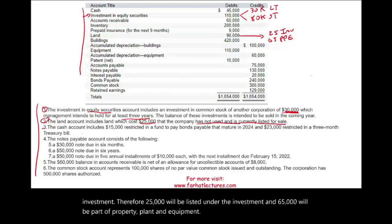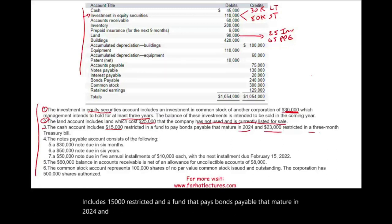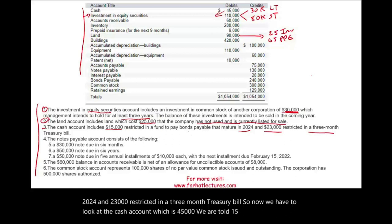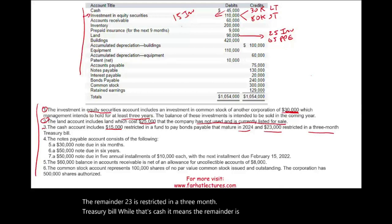Number three, the cash account includes $15,000 restricted in a fund that pays bonds payable that mature in 2024 and the $23,000 restricted in a three-month treasury bill. So now we have to look at the cash account, which is $45,000. We are told $15,000 is restricted for a long-term bonds payable. Well, it means of the $45,000, $15,000 will have to be considered an investment because it's restricted. We invested this. The remainder, $23,000 is restricted in a three-month treasury bill. Well, that's cash. It means the remainder is cash. So therefore, $15,000 is investment and the remainder, $30,000 is cash.